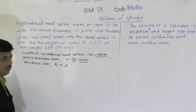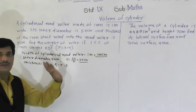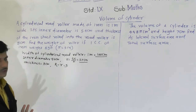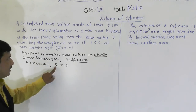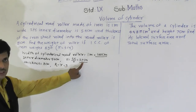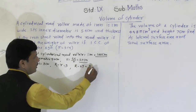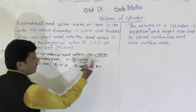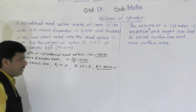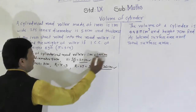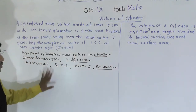This cylindrical road roller is an example of a hollow cylinder, so there are two types of radius: the external radius and the inner radius. We need to find the external radius. Inner radius is 27 centimeters, so: capital R minus 27 equals 9, therefore capital R equals 36 centimeters. Now we have external radius R=36 cm, inner radius r=27 cm, and height h=100 cm.